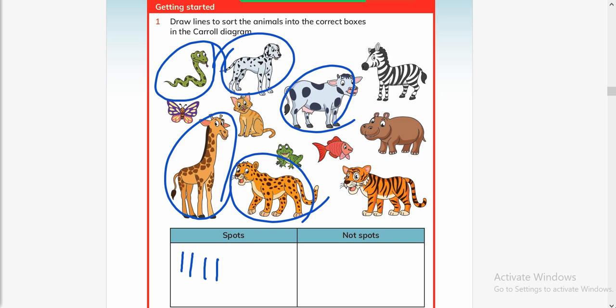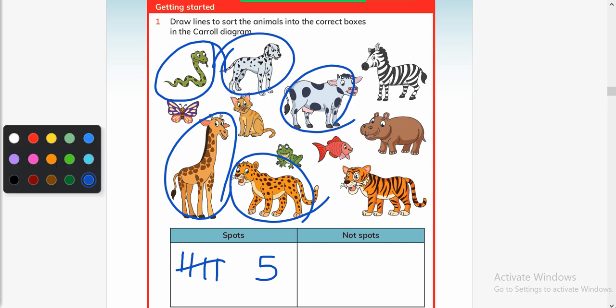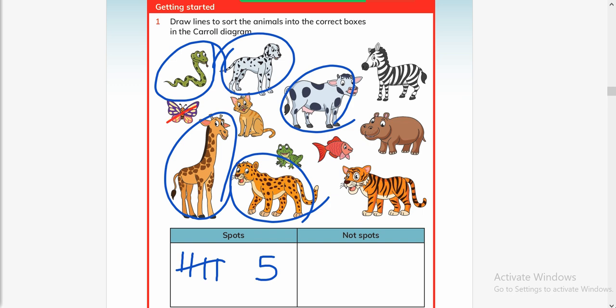Now which animals do not have spots? They are one, two, three, four, five, six, seven. So seven animals do not have spots.